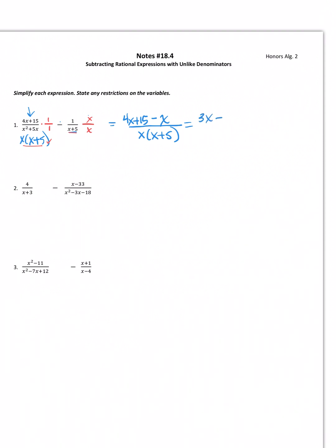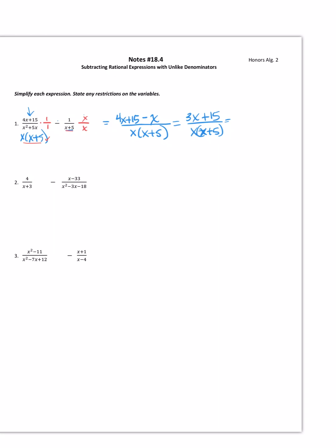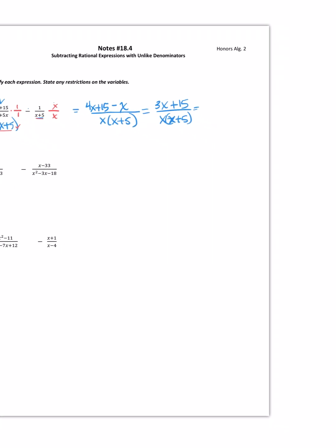Now, we just combine like terms. 4x minus x is 3x plus 15 over x times x plus 5. Now, we want to look and see, can we reduce it all? Well, at the top, there is a GCF, hopefully you see it, of 3. That gives me x plus 5. Now, I look at this and I have an x plus 5. And look at that. These will cancel out. My most simplified version is going to be 3 over x.